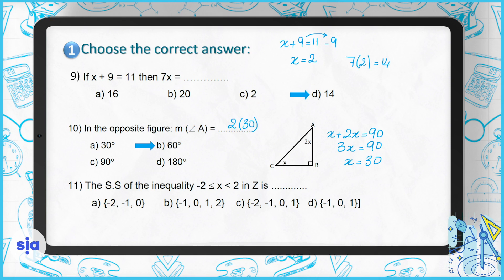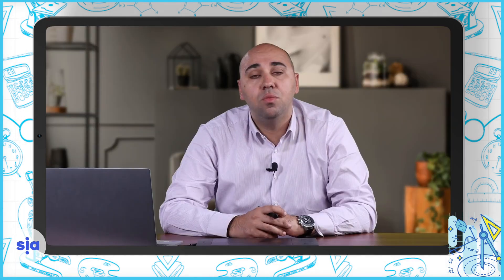Question 11: find the solution set of the inequality x greater than or equal to negative 2 and x less than 2, where x is an integer. Negative 2 is closed so it is included, while 2 is not included because there is no 'or equal to.' The integers from negative 2 up to but not including 2 are: negative 2, negative 1, 0, and 1. The right choice is choice C.